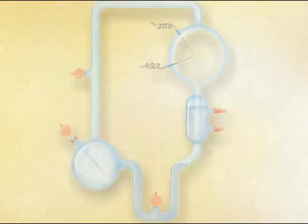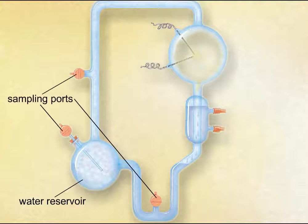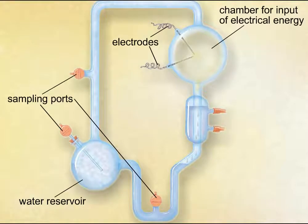In 1953, Stanley Miller and Harold Urey tested this hypothesis. They constructed a closed system with a reservoir for water, sampling ports, and a chamber for the input of electrical energy.